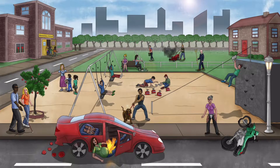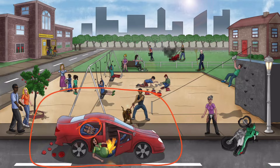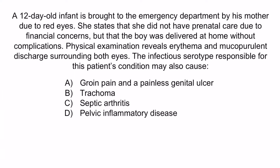From the image, the information around the dog represents serotypes D through K. The two babies with red eyes help you remember neonatal conjunctivitis occurs one to two weeks after birth, and the pregnant woman with her pelvis on fire reminds you that the same serotypes cause PID. Answer A is incorrect — groin pain and painless genital ulcer describes lymphogranuloma venereum, caused by serotypes L1, L2, and L3. Answer B is incorrect — trachoma is caused by serotypes A, B, and C. Answer C is incorrect — septic arthritis is associated with gonorrhea, not chlamydia; and gonorrhea causing neonatal conjunctivitis typically occurs two to five days after birth, so the timing doesn't fit. The correct answer is D, pelvic inflammatory disease.